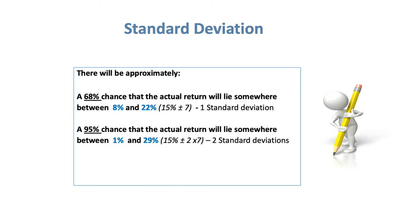Broadening out to two standard deviations, we simply take away 7 again and add 7 again. With 15 as the average, two 7s withdrawn is 14, and 15 minus 14 leaves us with 1. Two 7s added takes 15 to 29. So in 95% of occurrences, you would expect this investment — with an average return of 15% — to have a variance between a positive 1% and a positive 29% return per annum.